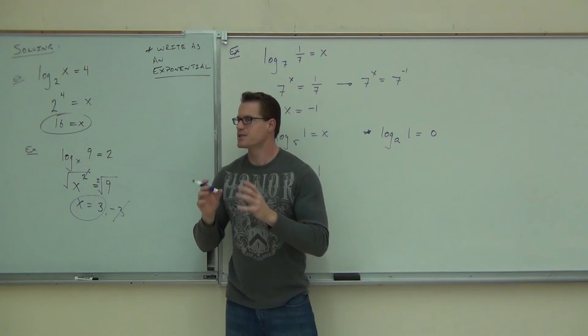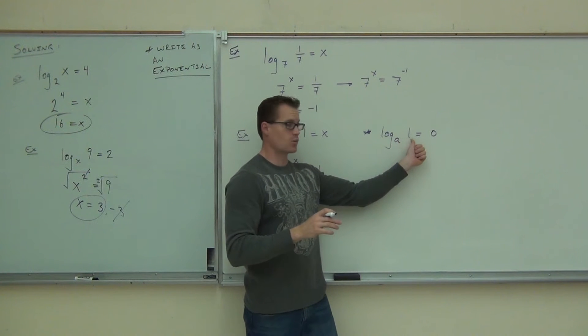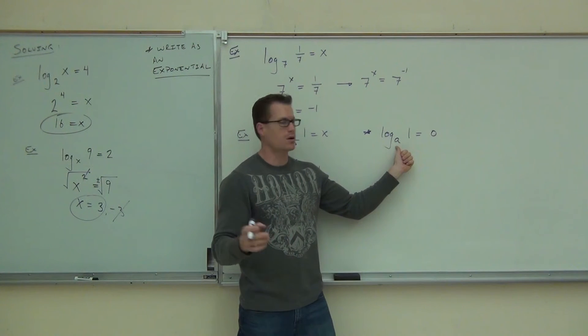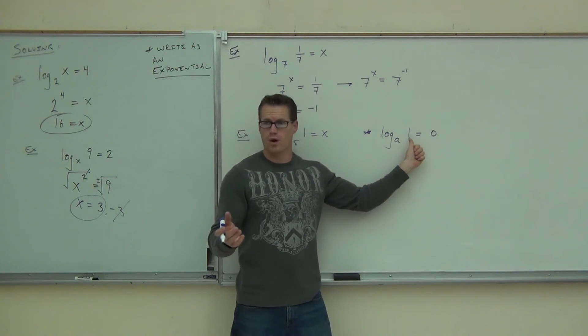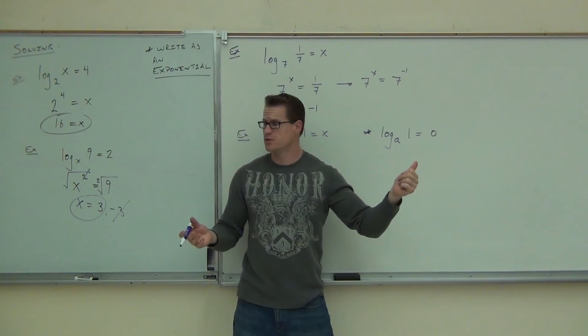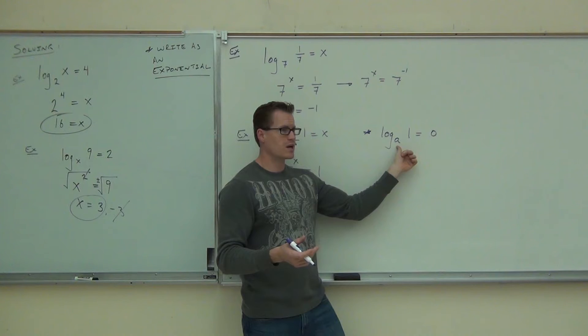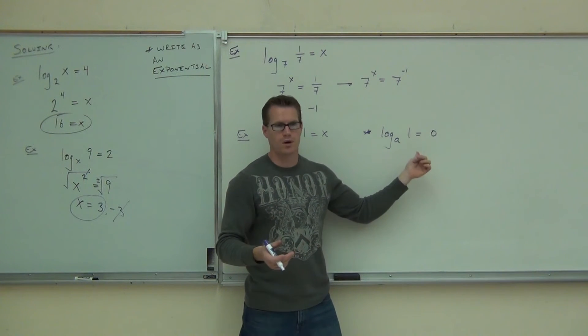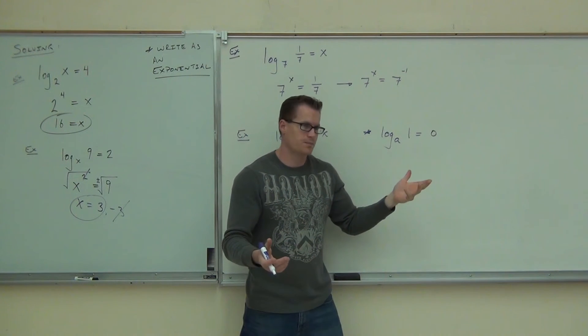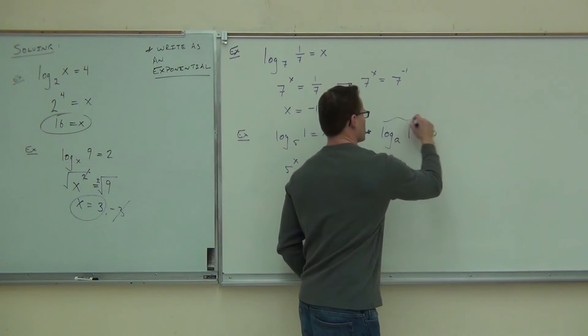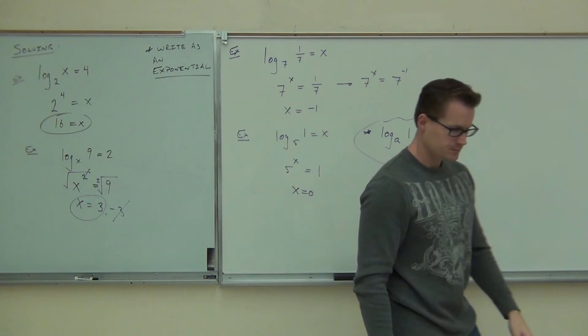So on your paper, every time you see log, if that's a 1, whatever your base is, it doesn't even matter. Log base whatever of 1 is going to be 0. Do you see why? Because it says no matter what you have, you have to raise it to the 0 power in order to get 1. That's how exponentials work. That's how this works. So that's just a little property that we have up here. An important one.